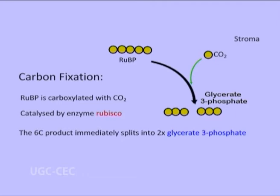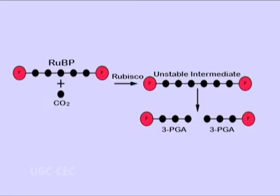This reaction is carried out by the enzyme ribulose bisphosphate carboxylase oxygenase, or rubisco. The enzyme rubisco catalyzes the carboxylation of RuBP by carbon dioxide, leading to formation of first a 6-carbon unstable intermediate, which immediately splits into two molecules of 3-phosphoglycerate or 3-PGA, that is 3-phosphoglyceric acid.